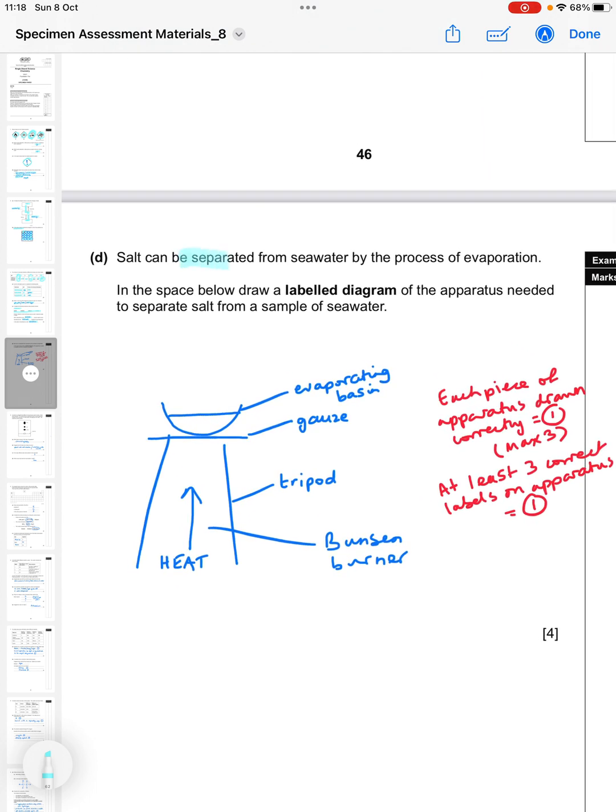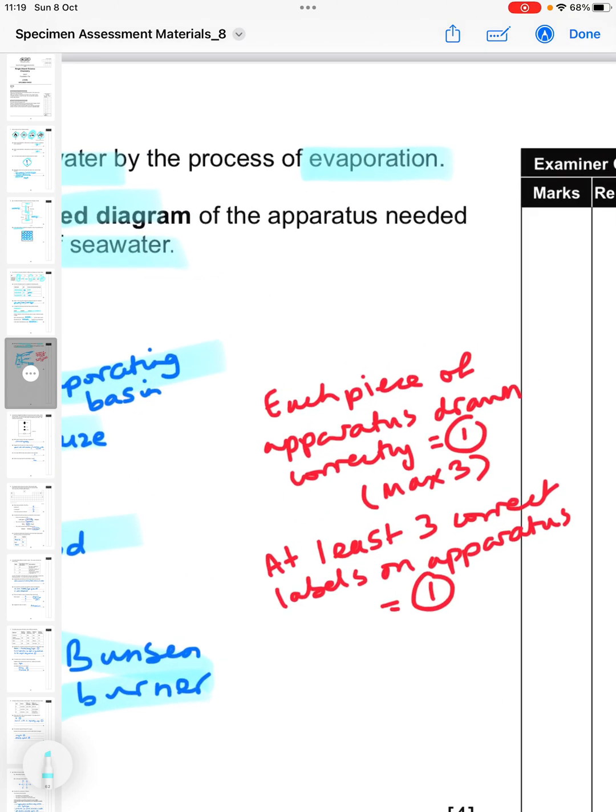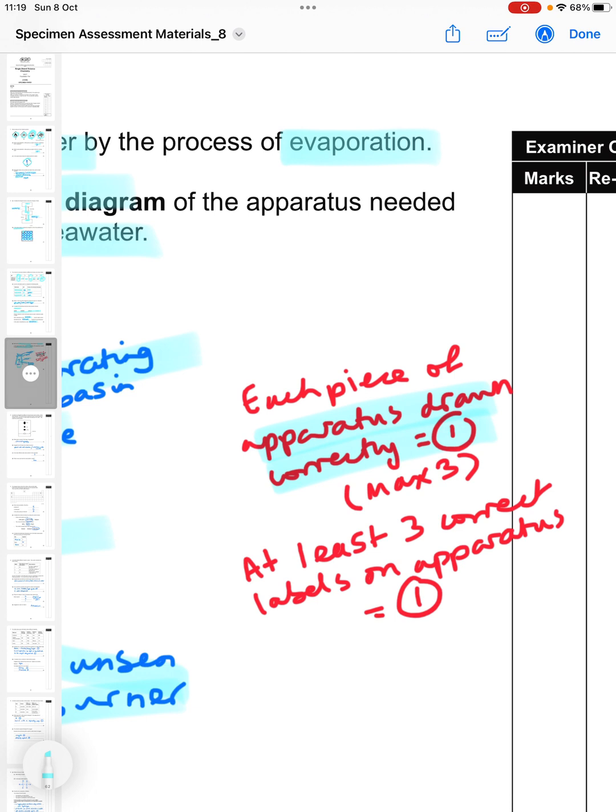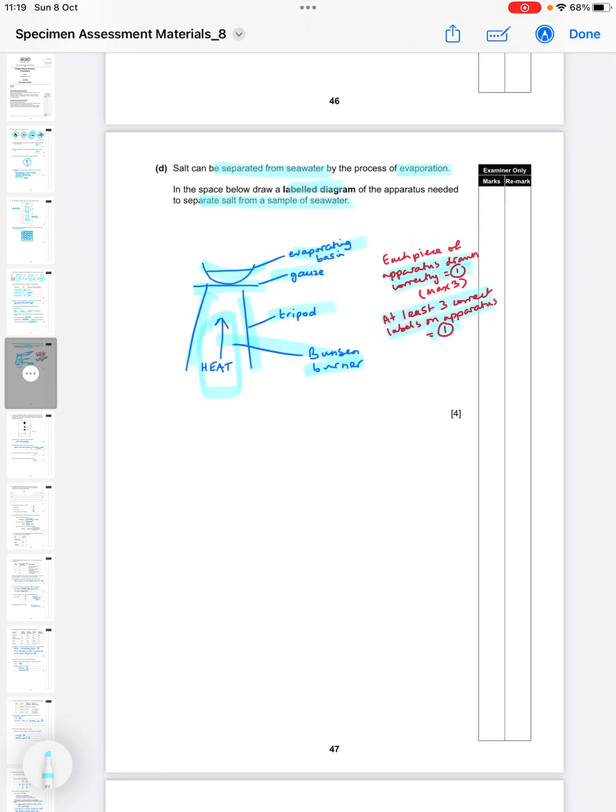Salt can be separated from sea water by the process of evaporation. In the space below draw a labeled diagram of the apparatus needed to separate salt from a sample of sea water. What I've got here is an evaporating basin sitting on top of a gauze on a tripod, and then there's a Bunsen burner underneath. Each piece of apparatus which was drawn correctly would be one mark to a maximum of three, and then if you had at least three correct labels on the apparatus that was your fourth mark.